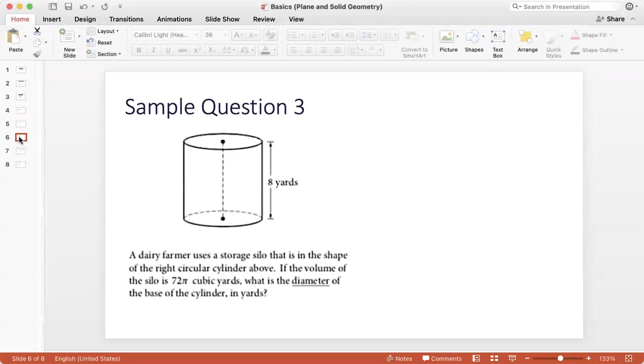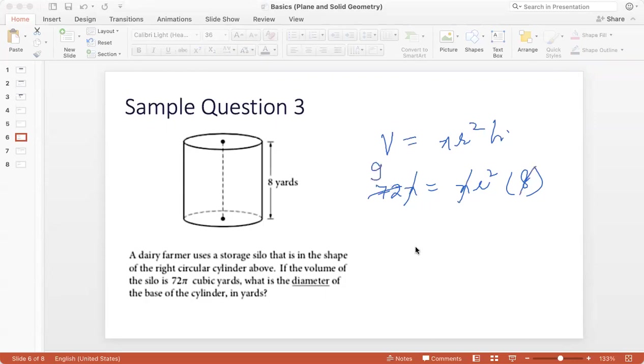Question 3. A dairy farmer uses a storage silo that is in the shape of the right circular cylinder above. If the volume of the silo is 72 pi cubic yards, what is the diameter of the base of the cylinder in yards? So we know that the volume of the cylinder is pi r squared h. Volume is 72 pi equals pi r squared and height is 8 yards. Pi and pi cancels. 8 cancels into 72. So r squared is 9. So the radius is 3. This is the radius of the base, but we have been asked the diameter, which will be twice the radius. So the diameter is 6 yards.